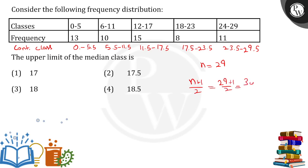The 15th term lies in the class interval 11.5 to 17.5. So for this class, the upper limit is 17.5, and hence option number 2 is the answer.